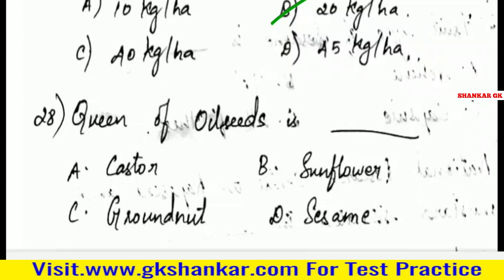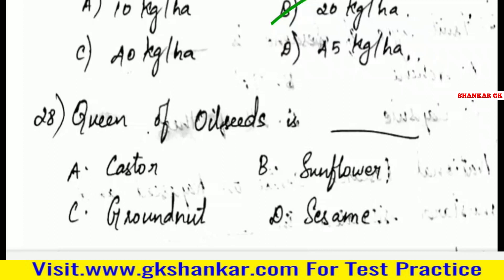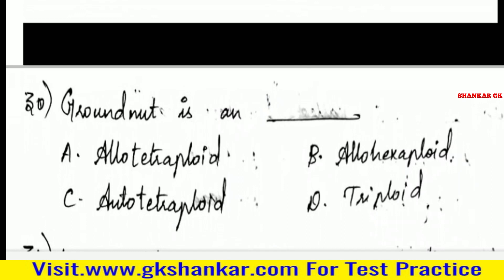Twenty-eighth question: Queen of oil seeds is — A. Castor, B. Sunflower, C. Groundnut, D. Sesame. Answer: D. Sesame.